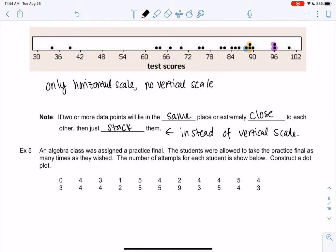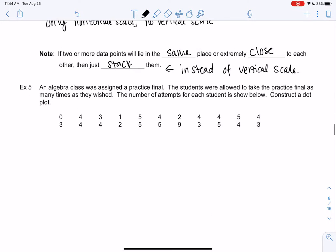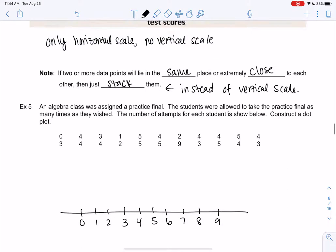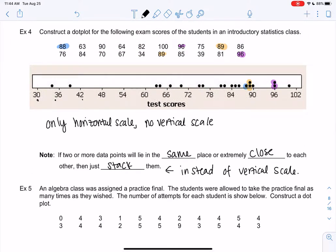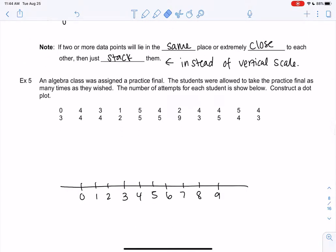So let's actually make one. Maybe in an algebra class, students were assigned a practice final, and I just recorded how many times they tried the practice final. Someone tried it zero times, someone took it three times, someone else is our very dedicated student and took it nine times. We're going to turn this into a dot plot. So we just make a horizontal scale. If we only have to go to nine, I'm just going to go zero through nine. If my numbers were more spread out, I might find a scale. You don't even have to start at zero for dot plots, which is nice. But it makes sense to start at zero here.